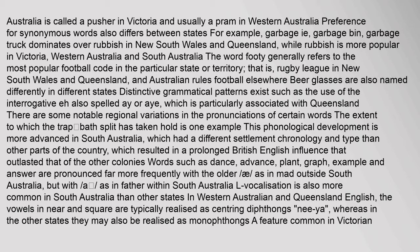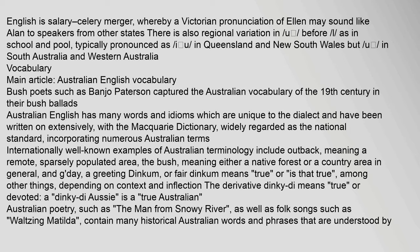A feature common in Victorian English is the salary-celery merger, whereby a Victorian pronunciation of 'Ellen' may sound like 'Alan' to speakers from other states. In Western Australian and Queensland English, the vowels in 'near' and 'square' are typically realised as centring diphthongs, whereas in the other states they may also be realised as monophthongs. There is also regional variation in 'u' before 'l', as in 'school' and 'pool', typically pronounced as 'iu' in Queensland and New South Wales but 'u' in South Australia and Western Australia.